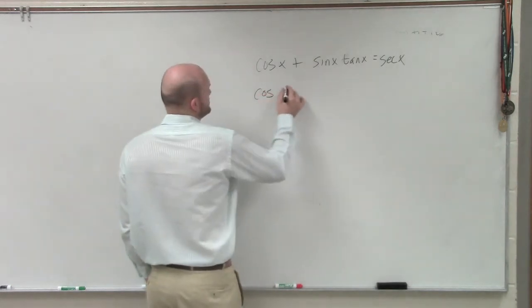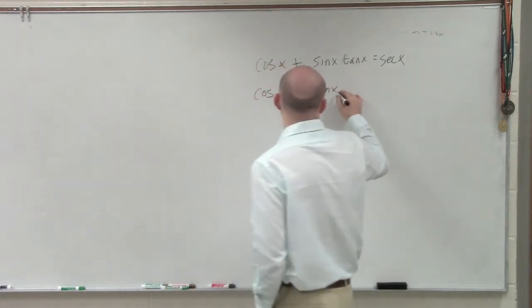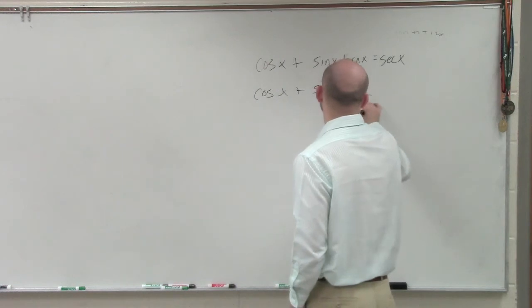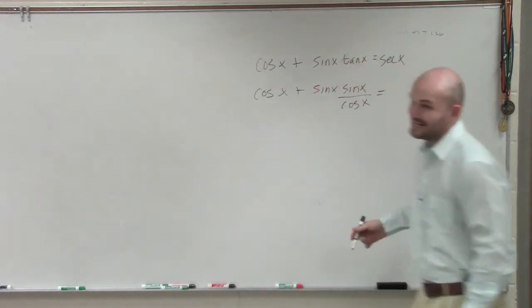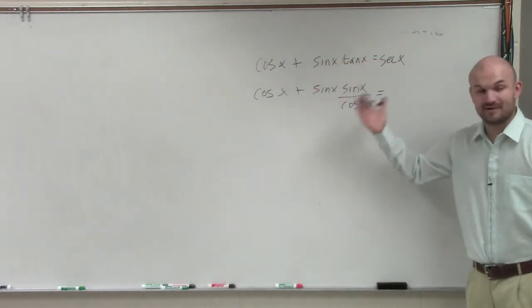So what I'll have here is cosine of x plus sine of x times sine of x over cosine of x. And again, I want this, the left side, to make it look like the right side.